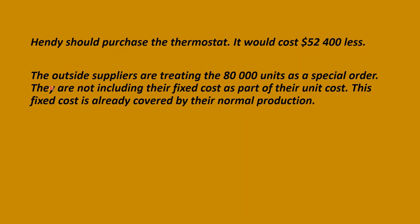The reason the outside supplier can charge $6 or a lower price is because the outside suppliers are treating the 80,000 units as a special order. They are not including their fixed costs as part of their unit cost — the fixed cost is already covered by their normal production.